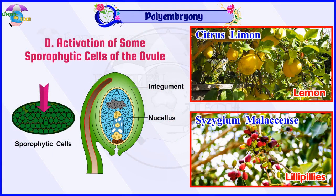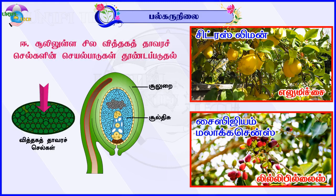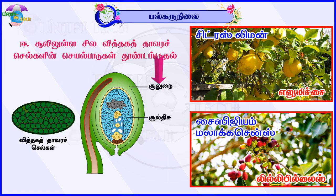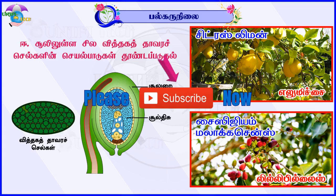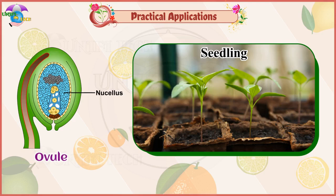Category D — Sporophytic origin: Activation of some sporophytic cells of the ovule. New cells from nucellar tissue. Examples: Citrus and Cucurbita.